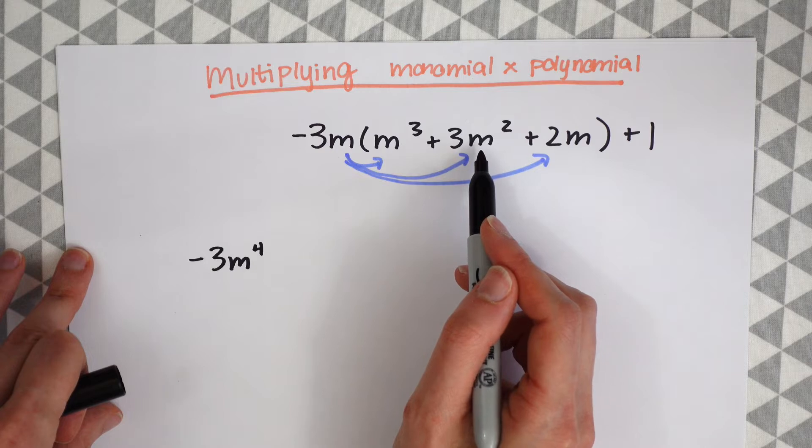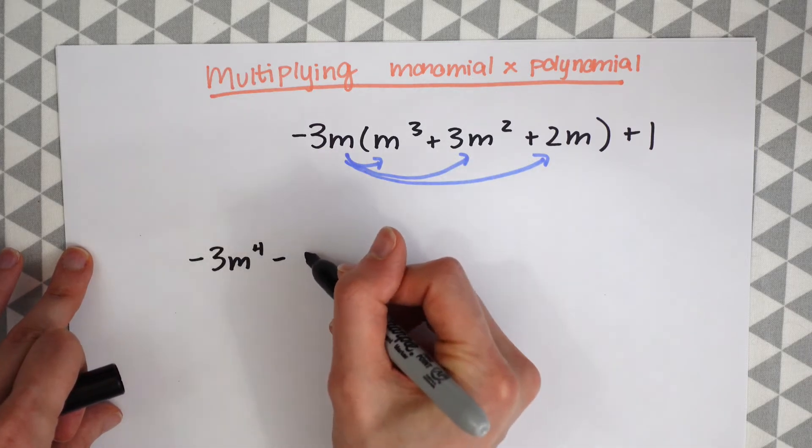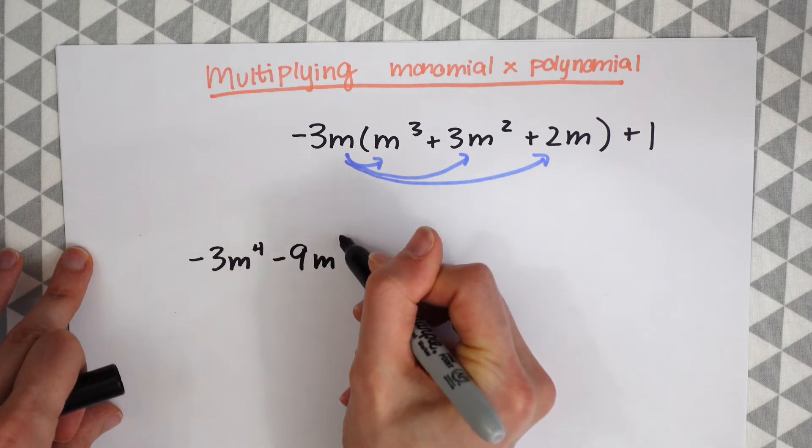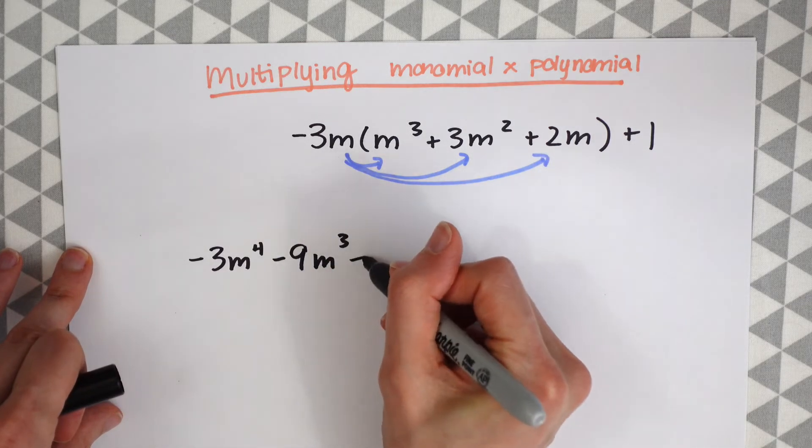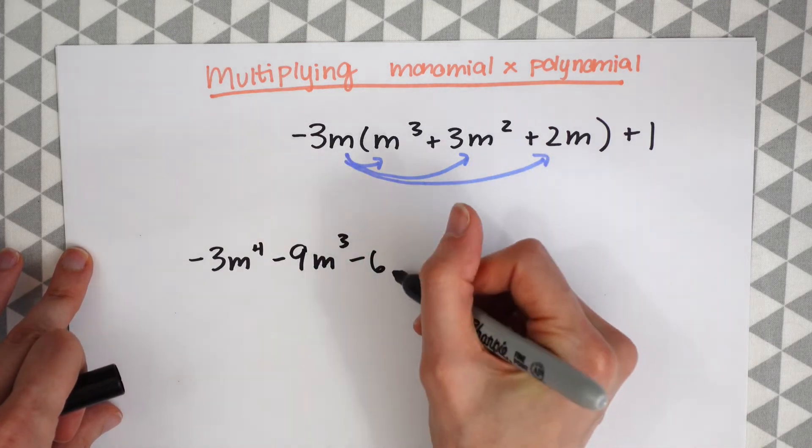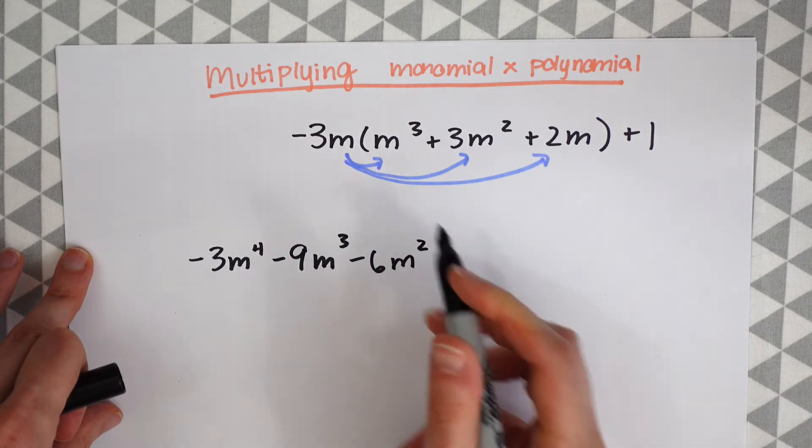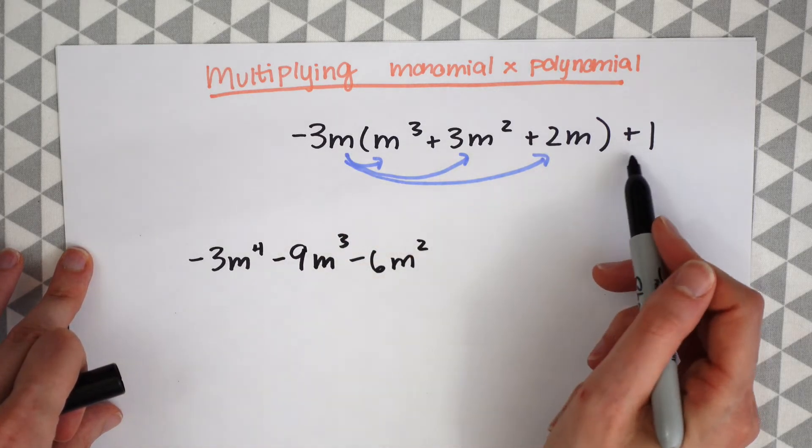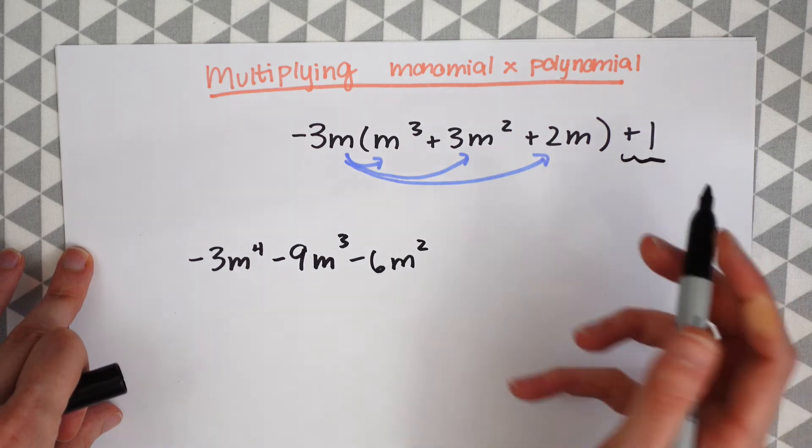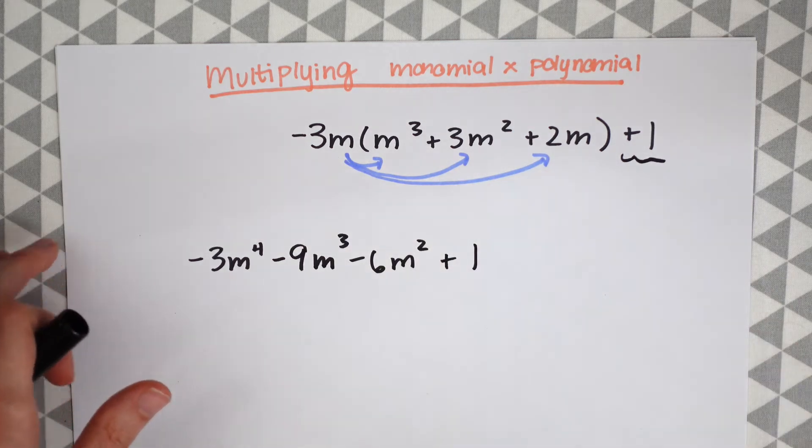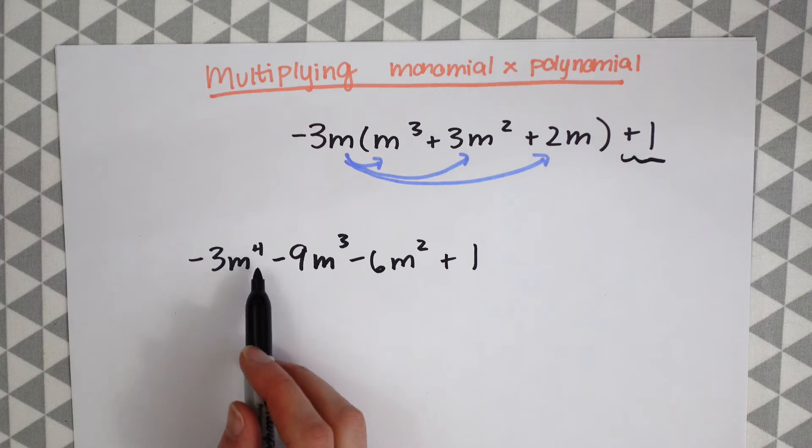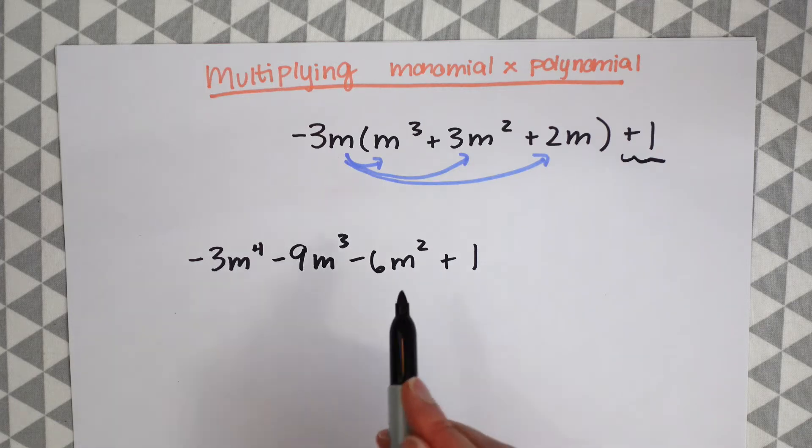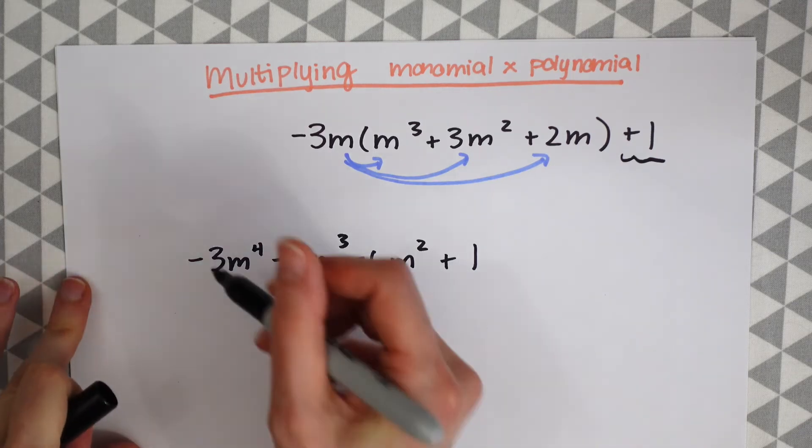Minus 3m times 3m squared. This will give us minus 9m raised to the 3rd power. Negative 3 times 2 is minus 6. And then we have 2m. So this will be m squared. And then don't forget about this 1, right? So we just want to bring this guy down. So this gives us an answer. We got negative 3m to the 4th power minus 9m cubed minus 6m squared plus 1. And that's our answer.